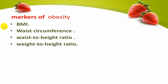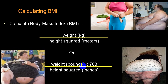The markers of obesity include BMI, waist circumference, waist-to-height ratio, and weight-to-height ratio. When you consider weight-to-height ratio you are calculating BMI. The most commonly used method is BMI, calculated by two formulas: one using weight in kilograms (divided by height in square meters) and another using weight in pounds.